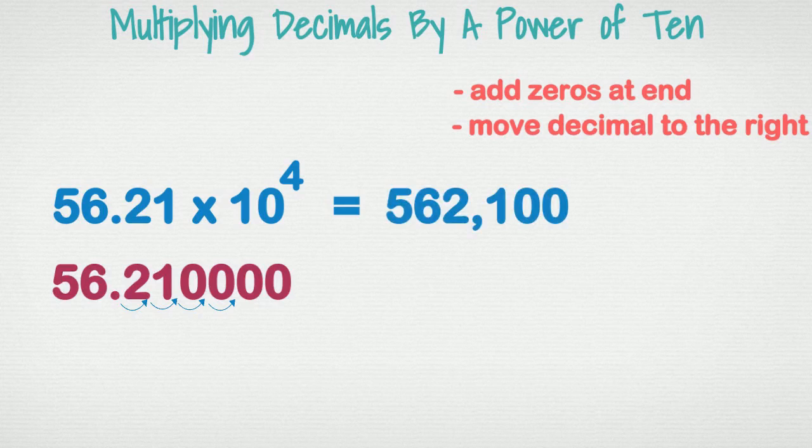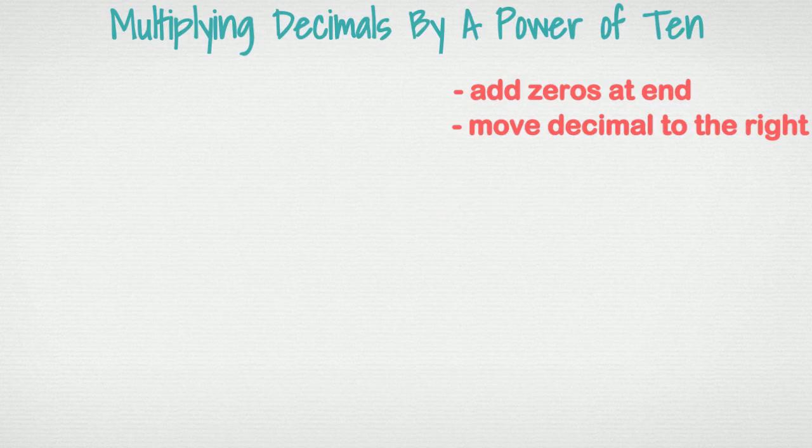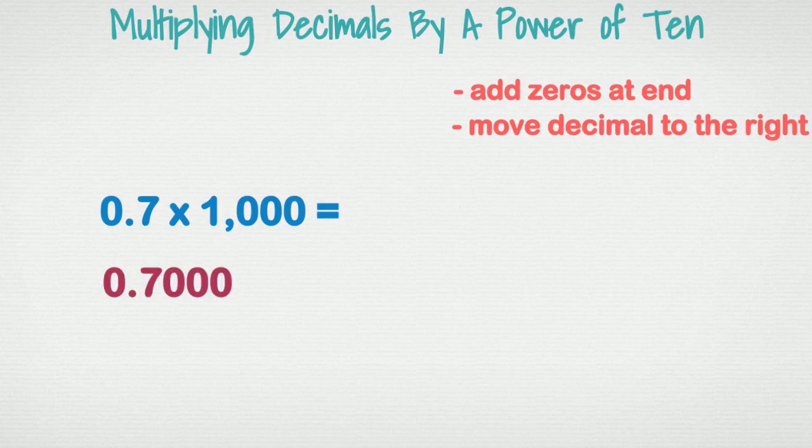That's it for multiplying decimals by a power of ten. We focused on using the power of ten with exponents, but you can do the same type of problem by using a power of ten that is not in exponential form. For example, 0.7 times one thousand. You can add the three zeros to the end and move the decimal place three spaces to the right. The answer is 700.